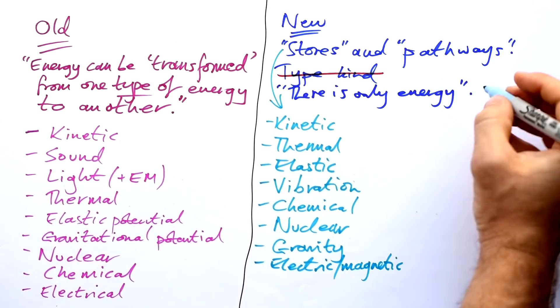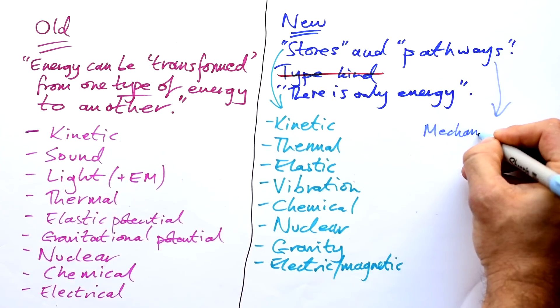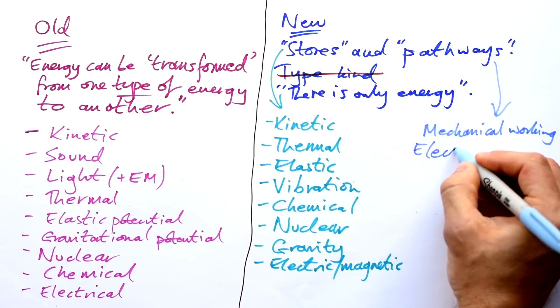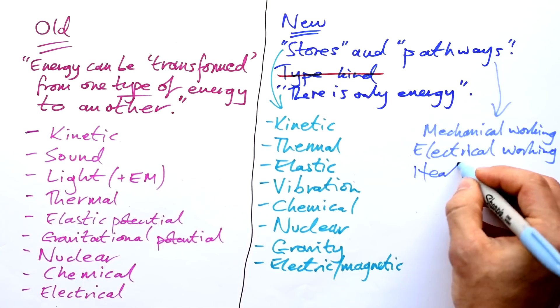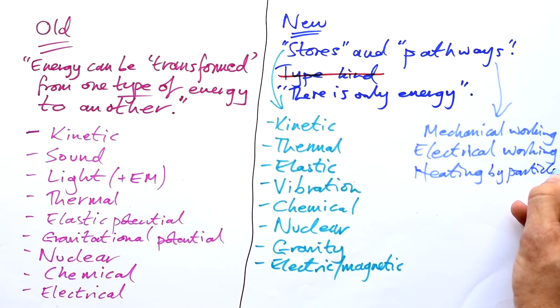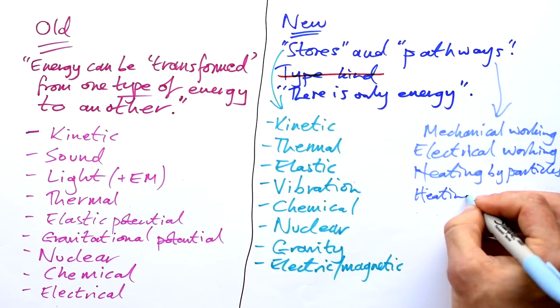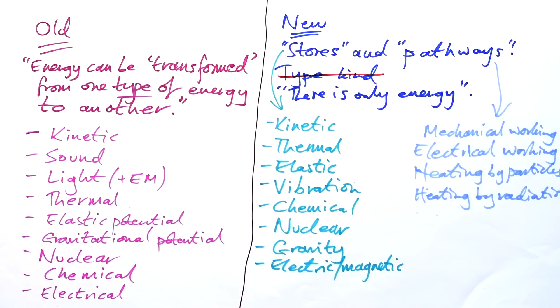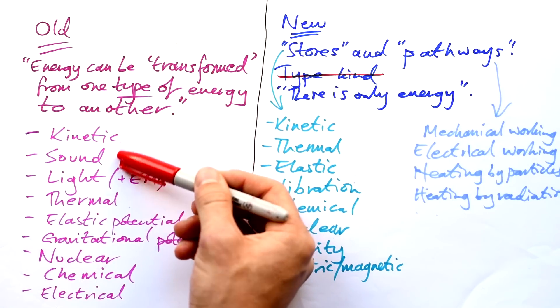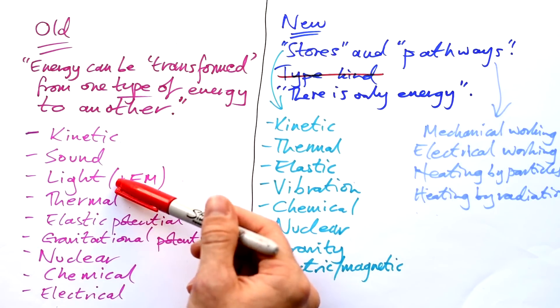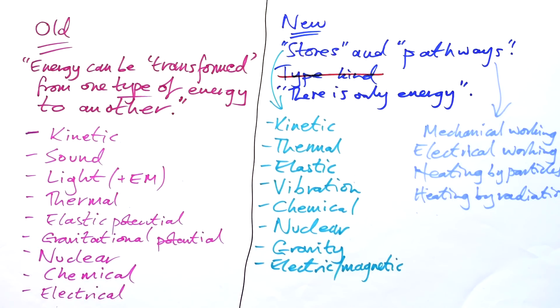Magnetic. Then we have our pathways: mechanical working, electrical working, heating by particles, and heating by radiation. So why are we not allowed to say type or kind anymore? Well, it's because they say that when you use the words type and kind, that somehow stops people from understanding that energy is energy. That somehow it stops them from understanding that kinetic can be turned into thermal, thermal can be turned into light. This is my first gripe with this new way of doing things.